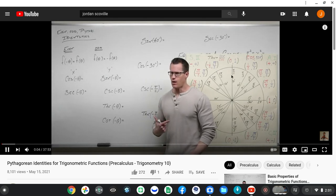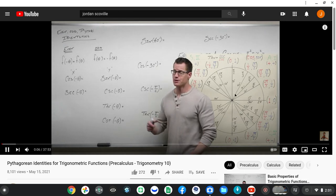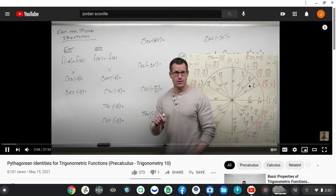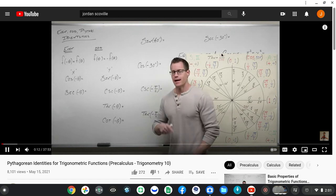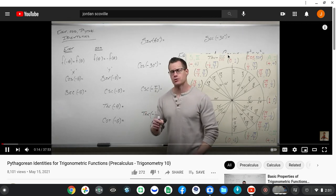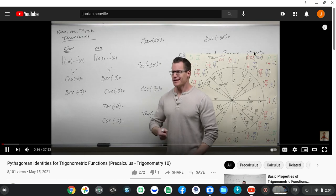We're going to talk about the even and odd identities of trigonometric functions, and we're going to talk about the Pythagorean identities, stemming from the Pythagorean theorem of the right triangle as it is described on a unit circle. So let's get right into it.